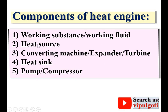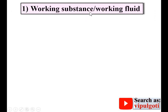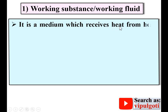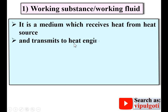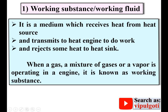Let's discuss all five important components one by one, starting with the working substance. It is a medium which receives heat from the heat source and transmits it to the heat engine to do work, and rejects some heat to the heat sink. The heat source is at higher temperature and the heat sink is at lower temperature. In other words, when a gas, a mixture of gases, or a vapor is operating in an engine, it is known as the working substance.